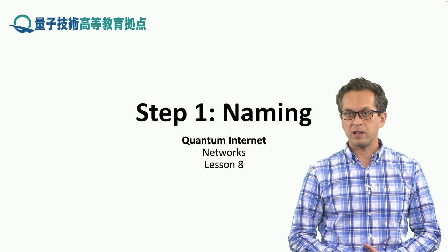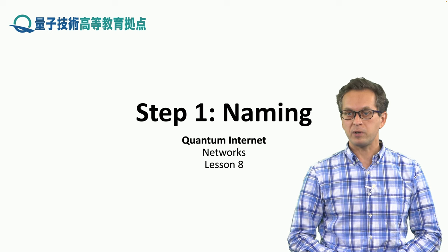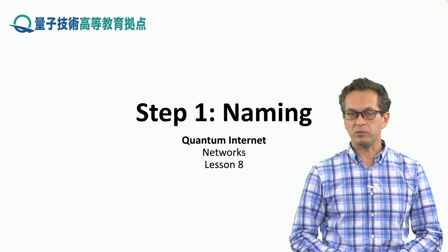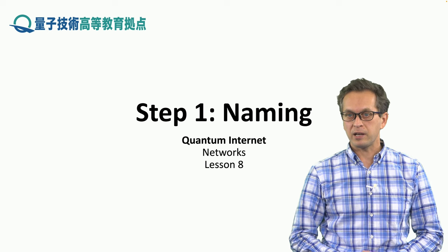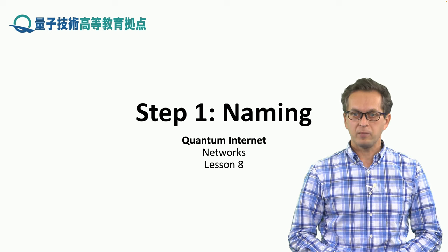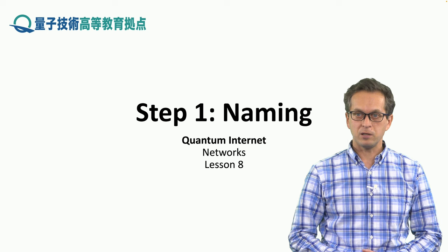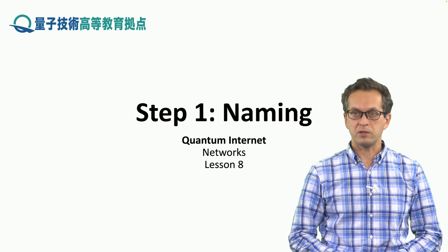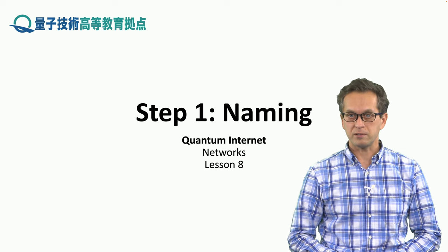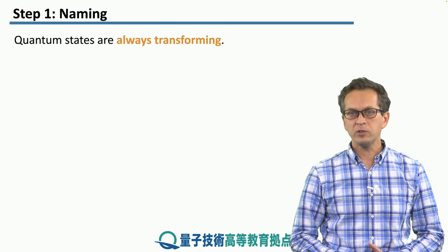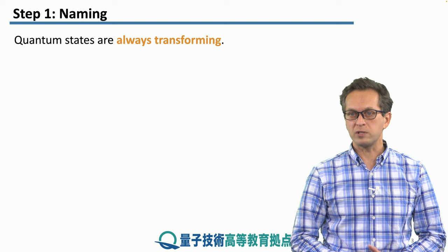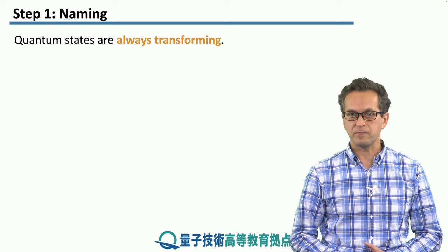We have been naming states as we have been learning about repeaters and quantum networks. And it seemed like a pretty straightforward thing — we didn't even think about it. But actually, there's a lot of subtle issues that we need to address. Quantum states are always transforming; they're not static.